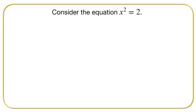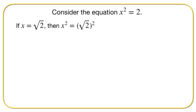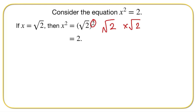Consider the equation x squared is equal to two. So if x is equal to the square root of two, then x squared is going to be equal to two. Let's have a look at that. We've got the root of two times the root of two, because square just means multiply it by itself. So root two times root two is equal to two.